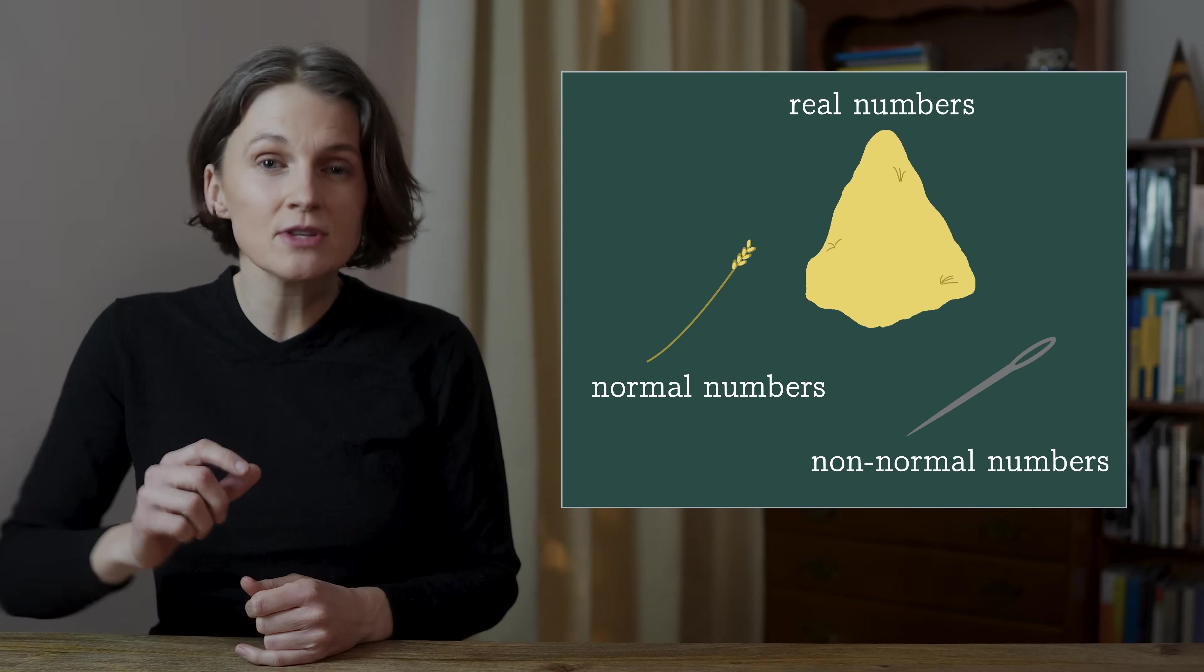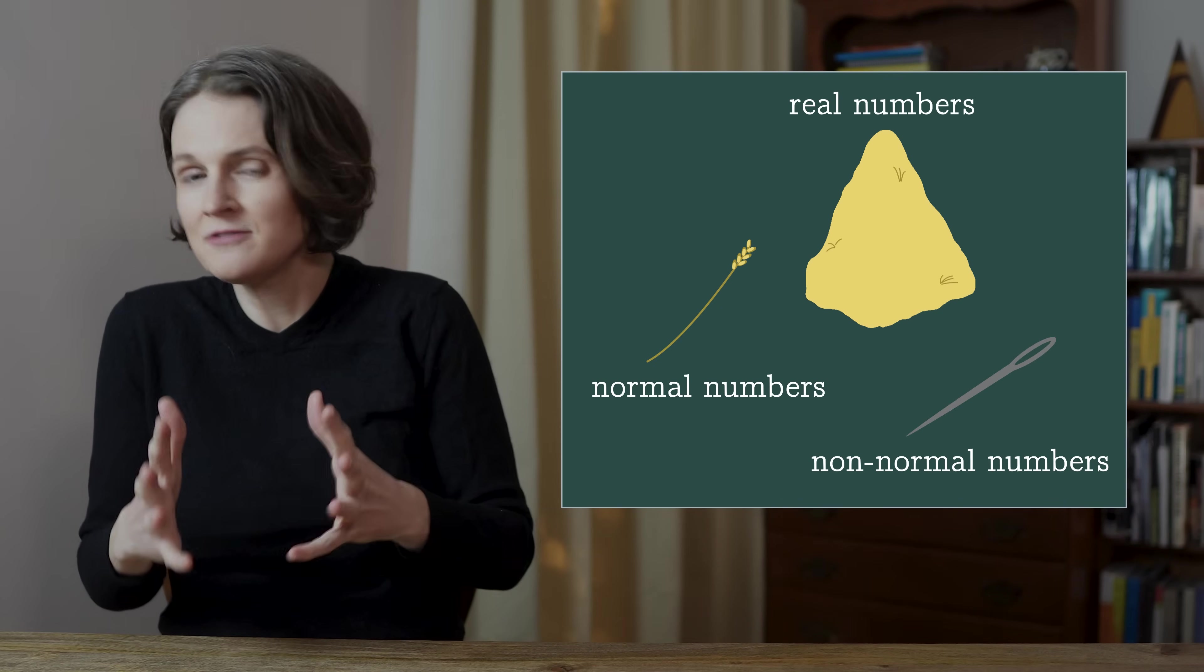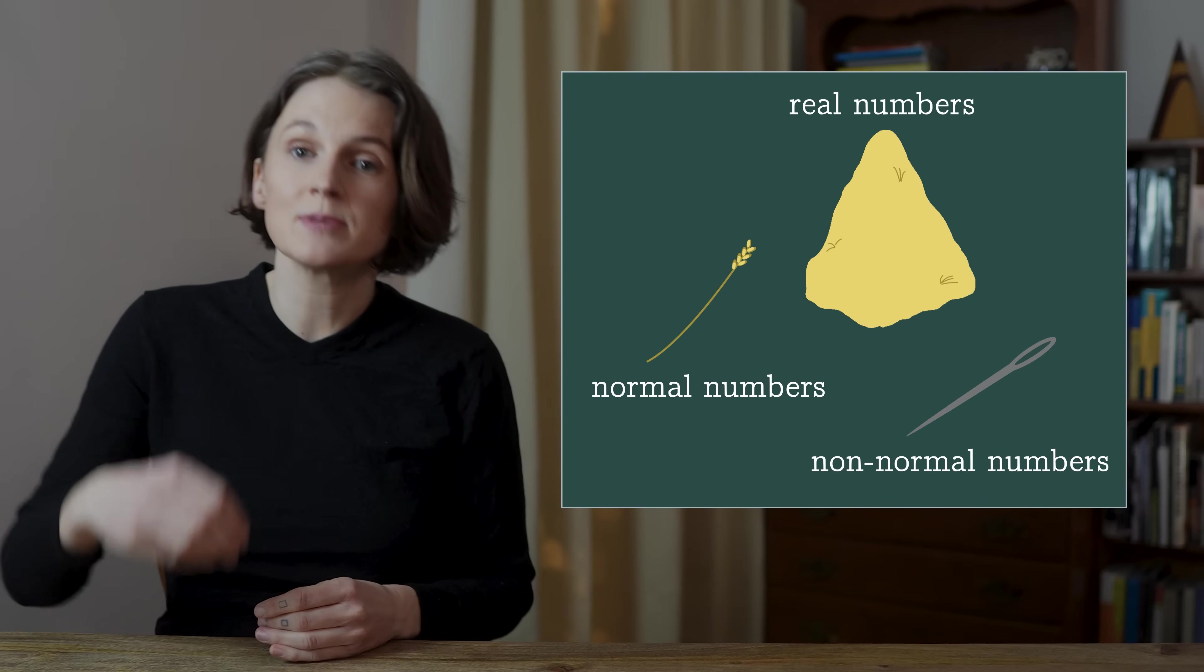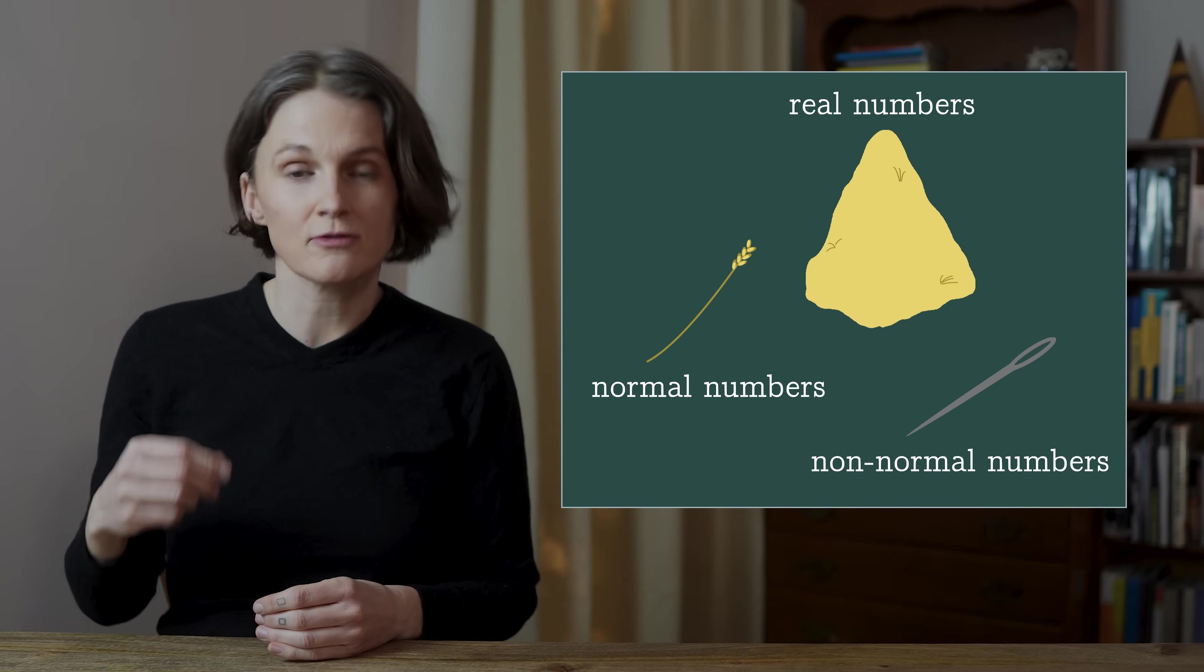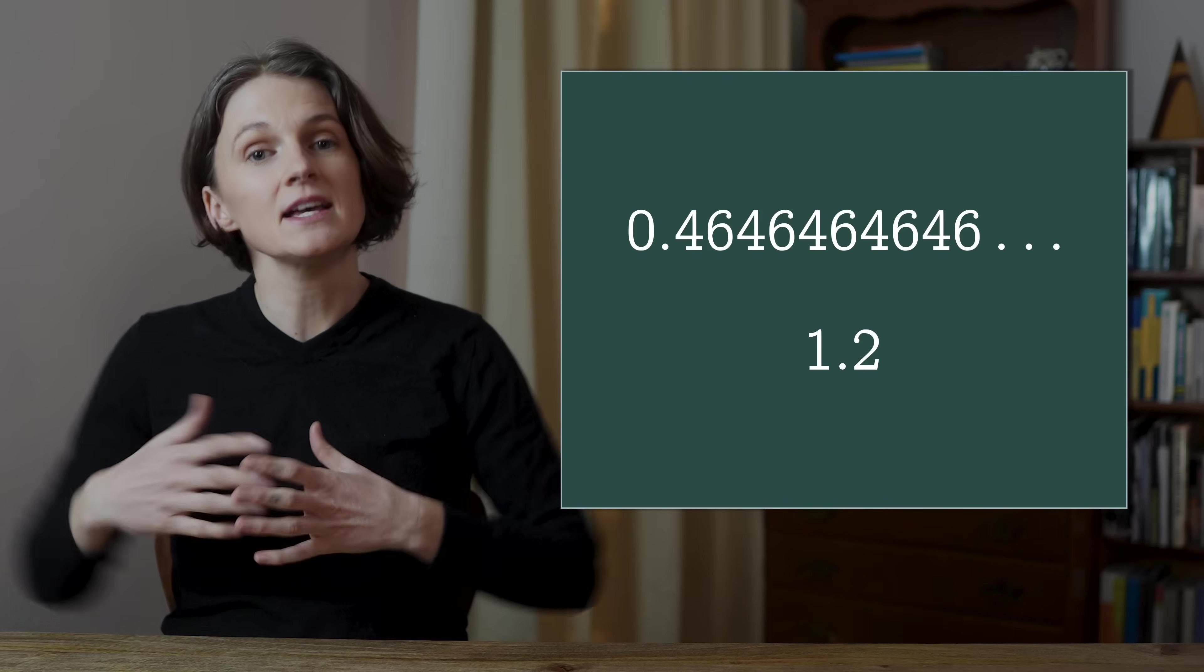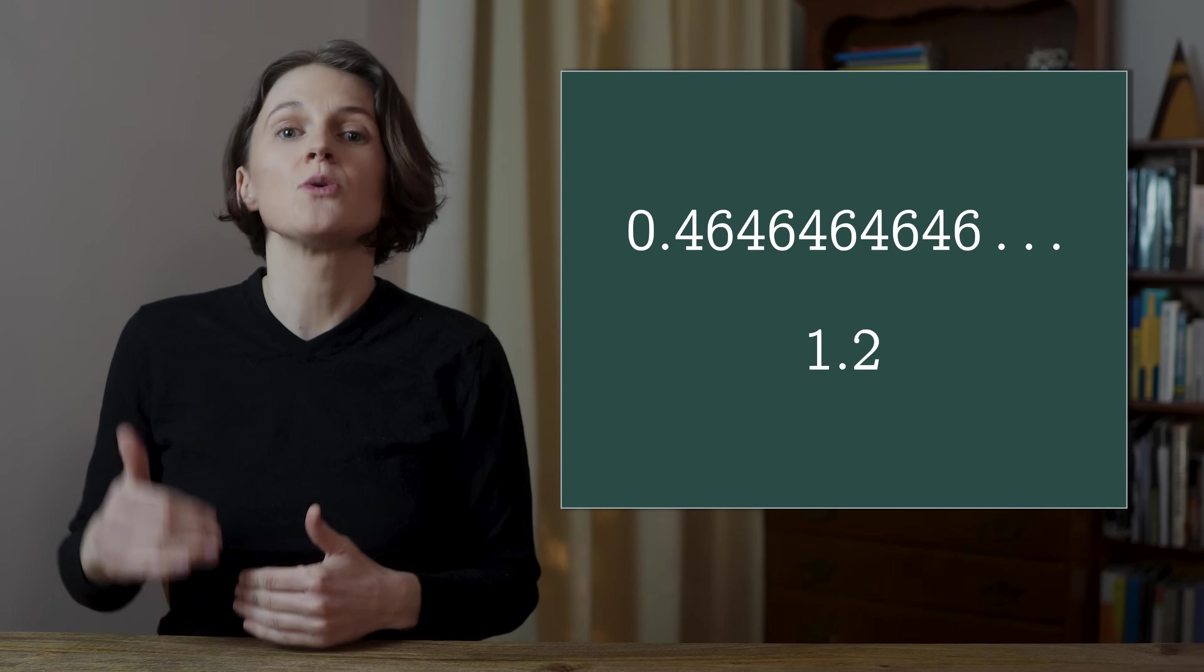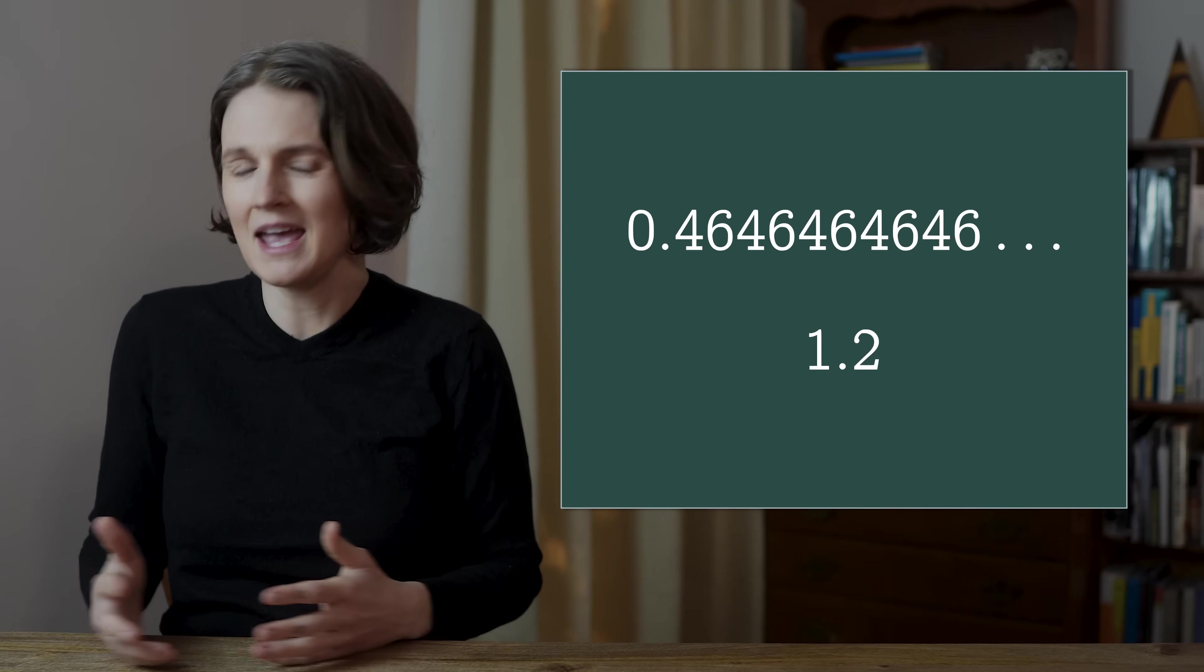But even though the needles are only 0% of this haystack, this sort of infinitesimal sliver, it's actually very easy to explicitly create a non-normal number, to pull a needle from this haystack. The decimal expansions of rational numbers repeat or terminate, so all the sequences of digits aren't equally distributed. They can't be normal.